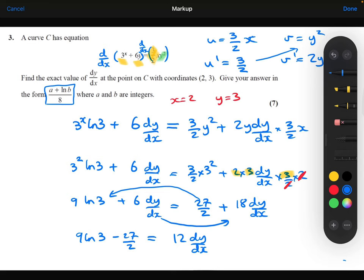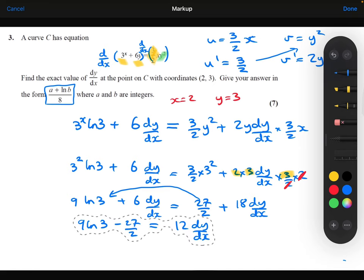If we now divide both sides by 12, I'm just going to give myself a little bit more room. So dividing both sides by 12, we'll get (9·ln 3 - 27/2)/12. Now you can see here, we can simplify this a little bit. We don't like that awkward fraction there.